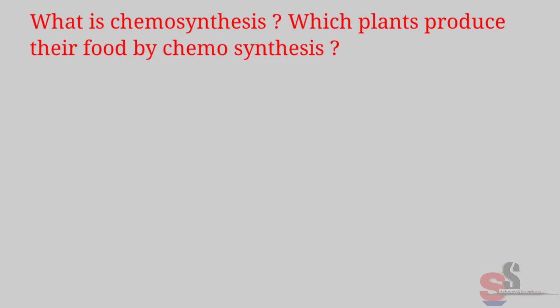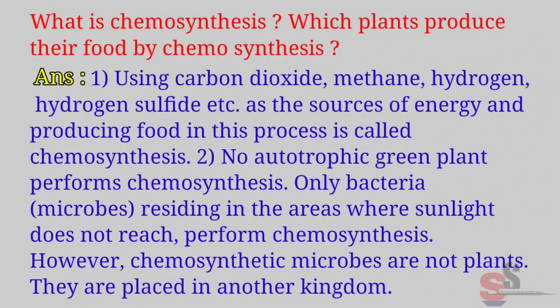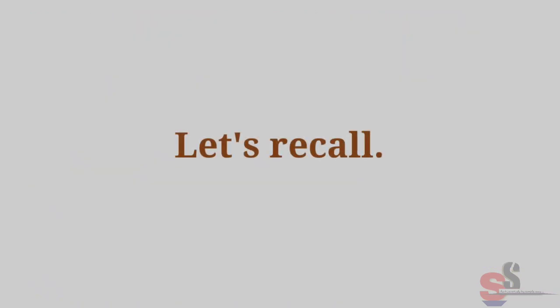Find out — Textbook page 27: What is chemosynthesis? Which organisms produce their food by chemosynthesis? Answer: Using carbon dioxide, methane, hydrogen, hydrogen sulfide, etc. as the source of energy and producing food in this process is called chemosynthesis. No autotrophic green plants perform chemosynthesis. Only bacteria-like microbes residing in areas where sunlight does not reach perform chemosynthesis.